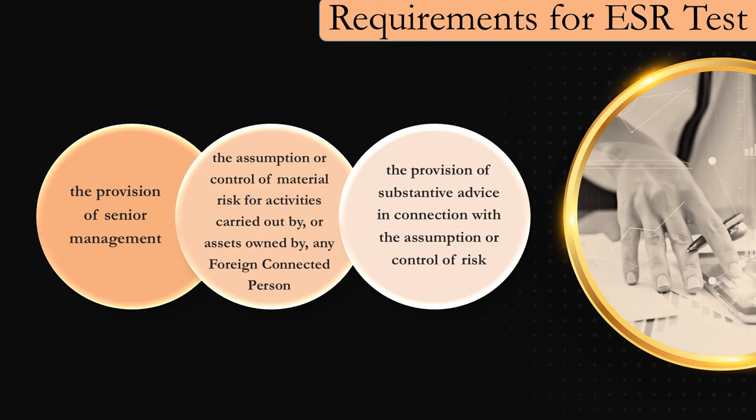If the services provided by the entity involve any of these, it is considered that they are taking responsibility for the overall success of the group or for the group's performance. A licensee's position in the group's corporate structure is not relevant for determining whether it is engaged in a headquarters business. The licensee does not need to be a direct or ultimate parent of the group company to be considered as a headquarters business.